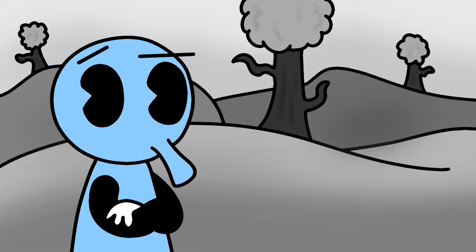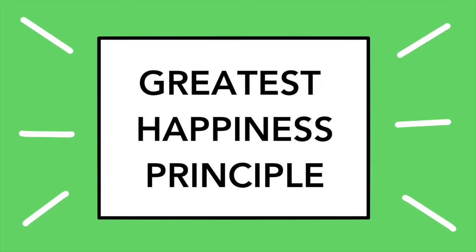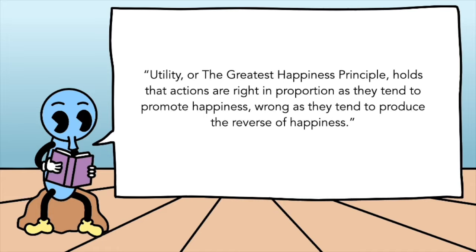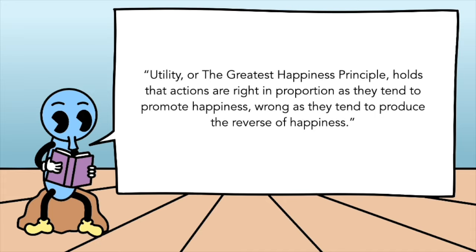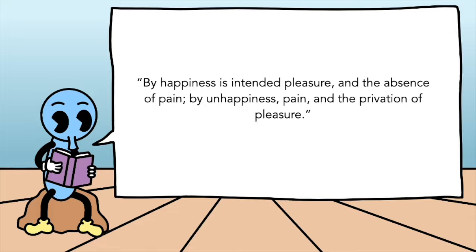But that's obviously not the entire story. We can't just say utilitarianism is all about pleasure, else it sounds kinda basic. Thankfully, Mill points us towards something called the Greatest Happiness Principle, which he believes is not only at the heart of utilitarianism, but all morals. Utility, or the Greatest Happiness Principle, holds that actions are right in proportion as they tend to promote happiness, wrong as they tend to produce the reverse of happiness. By happiness is intended pleasure and the absence of pain. By unhappiness, pain and the privation of pleasure.